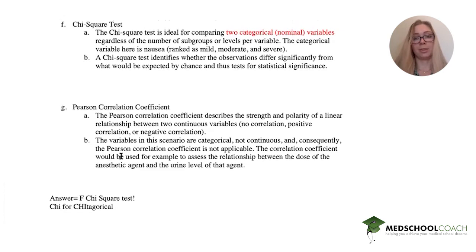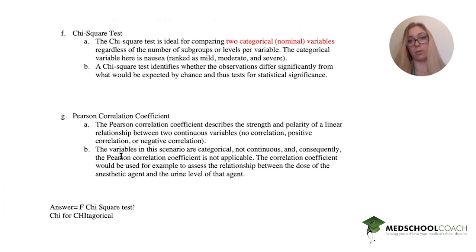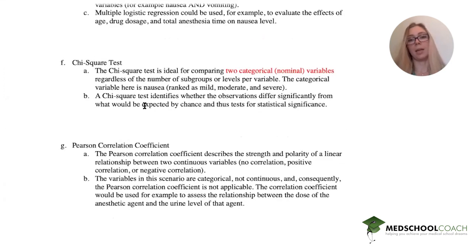So important takeaway points from this is know what a categorical versus a continuous variable is. So, you know, if they give you a set of means and a lot of numbers, that's not categorical. Categorical is something like, is there nausea or is there not nausea? Or what are the levels of nausea? And then knowing how many things you're comparing. So, are you comparing categorical variables? Then you want chi-square test.